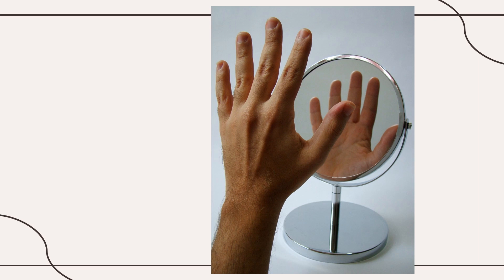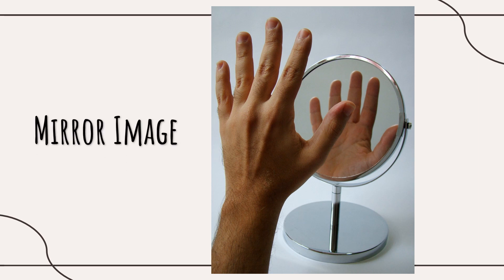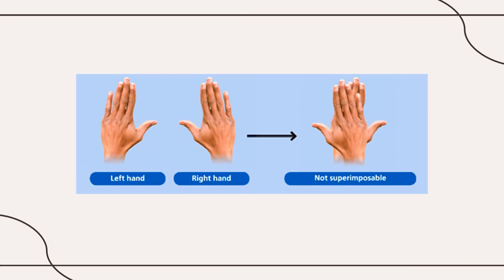Everything has a mirror image. If you hold your left hand up to a mirror, you see its mirror image, which matches your right hand. If you turn your palms down and toward each other, one hand is the mirror image of the other. If you look at the palms of your hands, your thumbs are now on opposite sides. If you place your right hand over your left hand, you cannot match up all the parts of the hands — the palms, the back, the thumbs, and the little fingers. Your hands are mirror images that cannot be superimposed on each other. When the mirror images cannot be completely matched, they are called non-superimposable.